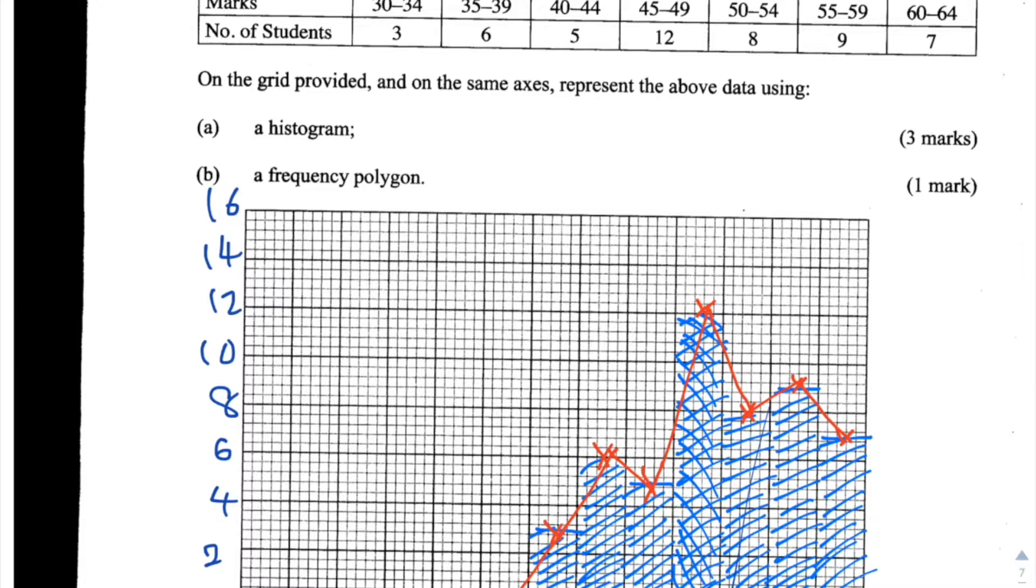So the first thing to do is to start off by labeling your axes and finding a suitable scale. So for the marks, they go from 30 to 64. I've chosen to use 0 to 65 here because it works quite well with the grid that we're provided. But you don't have to start with 0, you don't have to start at the origin, you can just have a graph that goes from 30 to 35 or something like that. So you'll always have this on the x-axis, and on the y-axis is the number of students. And I've just gone up in twos there.